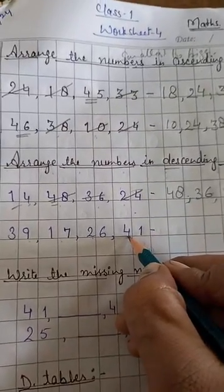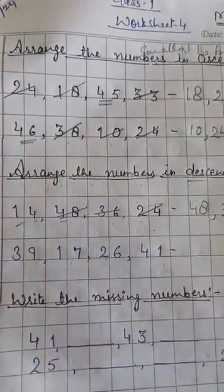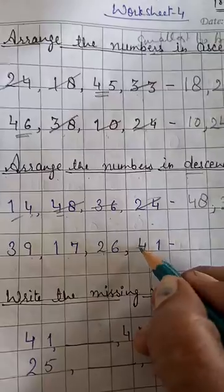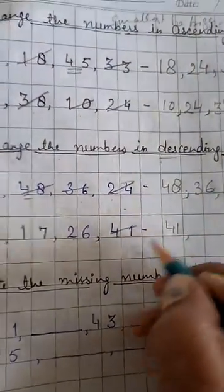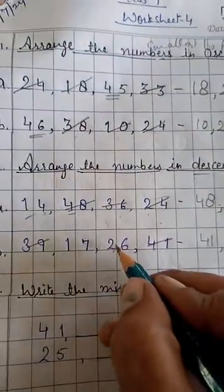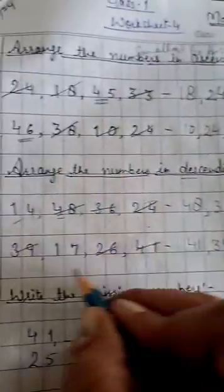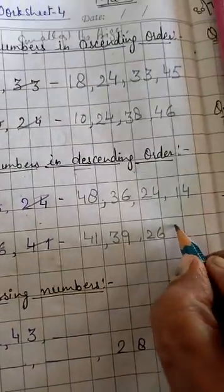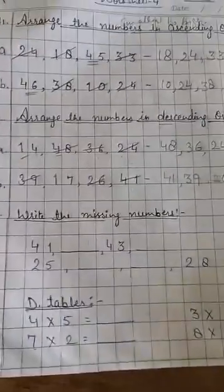What we will do first? First, we will choose the greatest number. Which one is? 41. Right here. 41. Next, 39. Next, 26. And next, 17. Okay. Very good students.